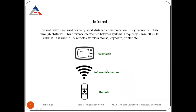The third type is infrared. Infrared waves are used for very short distance communication. They cannot penetrate through obstacles — if something is in between, the signal cannot pass through. This prevents interference between systems. The frequency range is from 300 gigahertz to 400 terahertz. Infrared is used in TV remotes, wireless mice, keyboards, printers, etc.